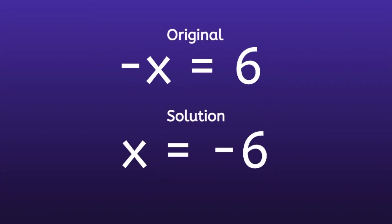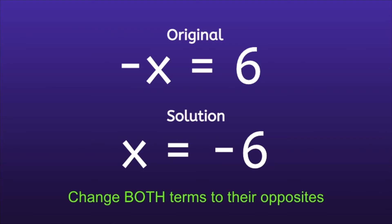I want to take a moment to compare the original equation to the new solution, and show you a quicker way to solve these. The original equation started with a negative x, and the new solution has a positive x — those are opposites. The original equation had a positive 6, and the new solution ended with a negative 6, which is the opposite again. So whenever we have a negative variable, we can change both terms to their opposites.